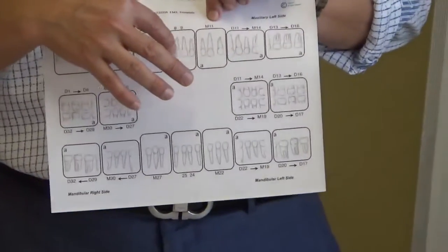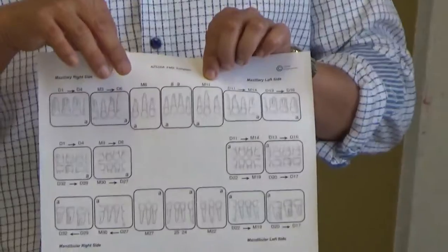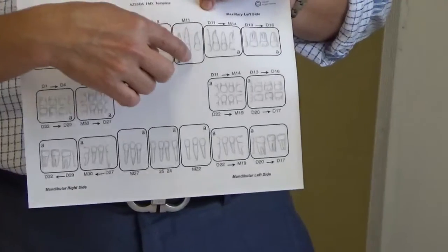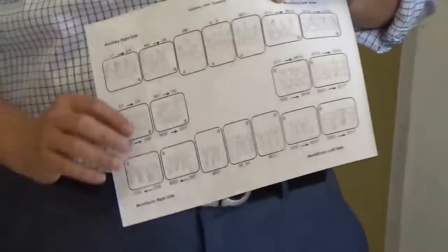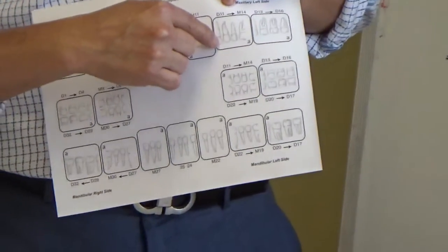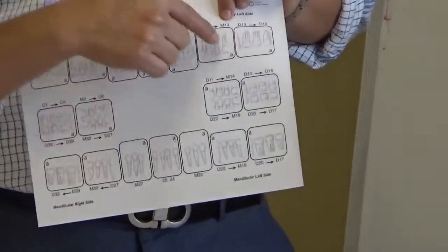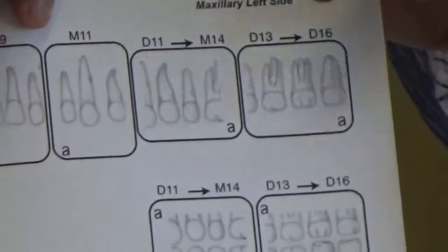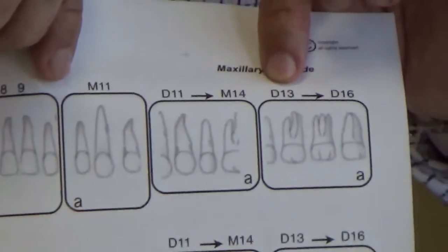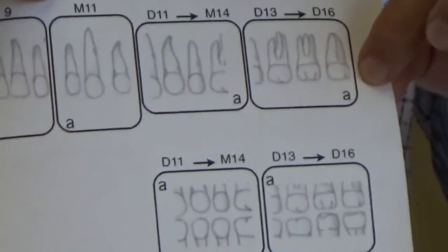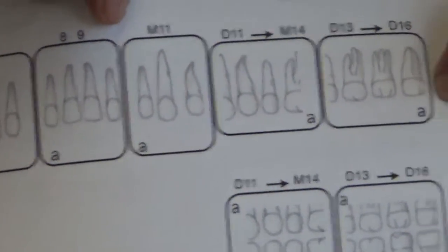The middle PA should get those two centrals right in the center. For the canine PA on the upper left side, you want the mesial surface of tooth number eleven. The first PA on the left side should get at least the distal surface of tooth number eleven and the mesial surface of tooth number fourteen, which is your first molar. The last PA on the upper left side should get the distal surface of tooth number thirteen to the distal surface of tooth number sixteen, which is the last molar.